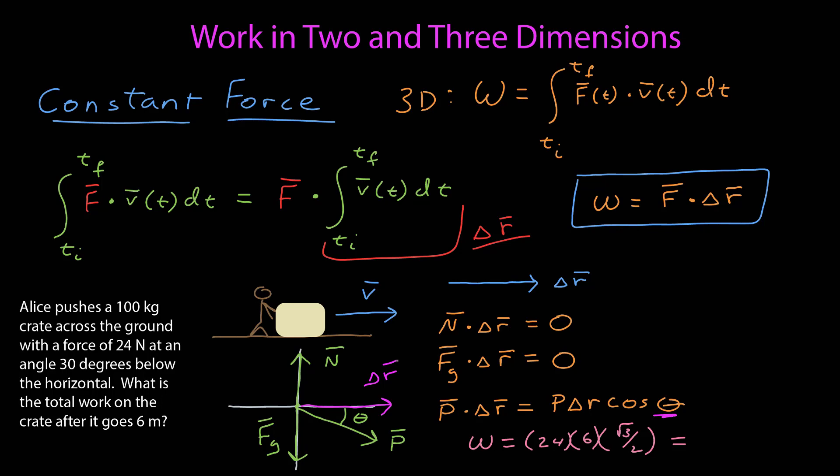So I can calculate my work by putting in those numbers, the magnitude of the pushing force, 24, magnitude of the displacement, 6, and cosine of 30 degrees is the square root of 3 over 2. Calculating that, I get the total work, 72 times the square root of 3 joules.